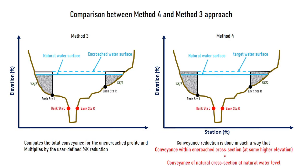Just to show you the difference between method 3 and 4 again: method 3 is based on base flood elevation in calculation of conveyance reduction, and method 4 is based on conveyance difference between base profile and base plus target profile.